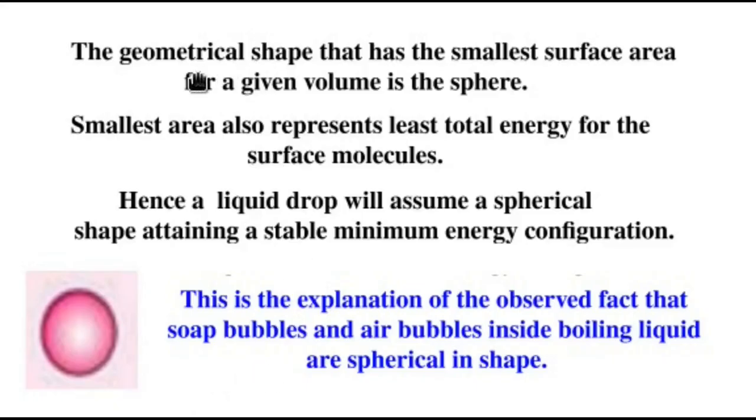Now, it is well known that the geometrical shape that has the smallest surface area for a given volume is the sphere. Now, smallest area also represents least total energy for the surface molecules. Therefore, a liquid drop will assume a spherical shape thereby attaining a stable minimum energy configuration. This is the explanation of the observed fact that soap bubbles and air bubbles inside a boiling liquid are spherical in shape.